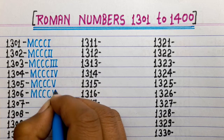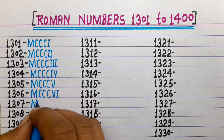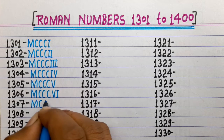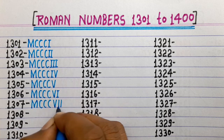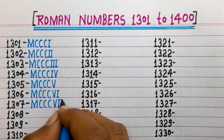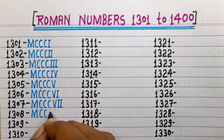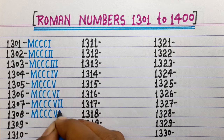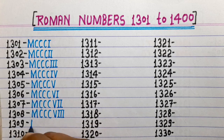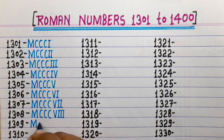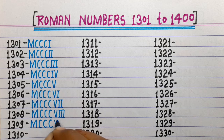1306 is MCCCVI. 1307 is MCCCVII. 1308 is MCCCVIII. 1309 is MCCCIX.